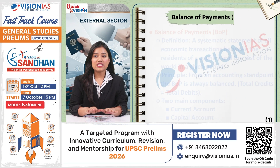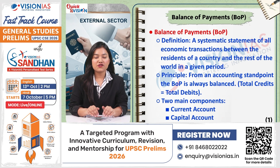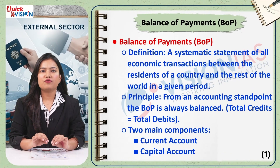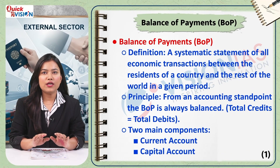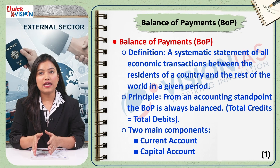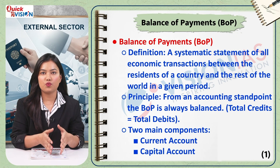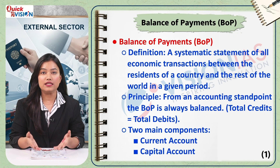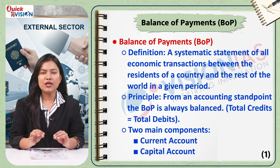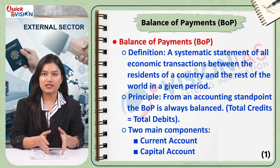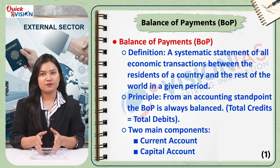What is the balance of payments, or BOP? It is a systematic record of all economic transactions between the residents of a country and the rest of the world during a specific period, usually a year. Think of it like a country's balance sheet. It has two main accounts: the current account and the capital account.